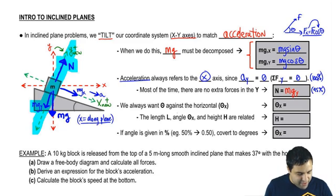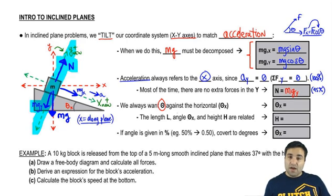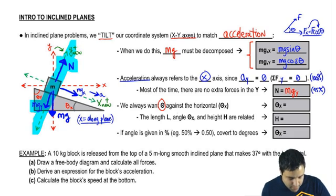A few more points. We always want theta to be against the x axis right here. So I'm going to call that theta or theta x just to be super clear that we want it to be in the x axis. If it's not in the x axis, if you get an angle up here, I'm going to call this theta y because it's theta with the vertical between the angle, the plane and the vertical.